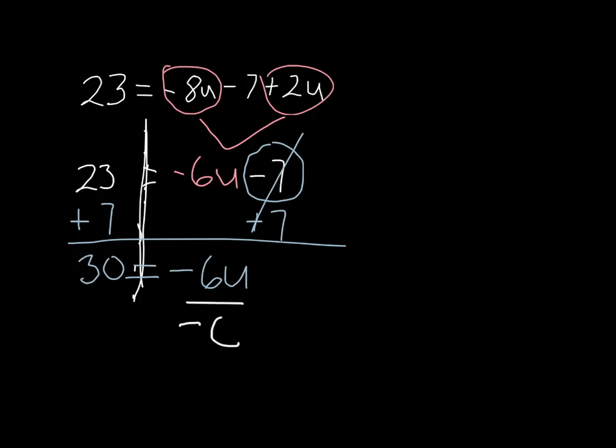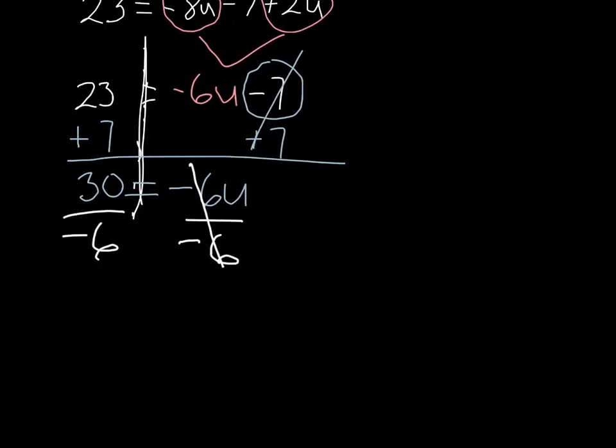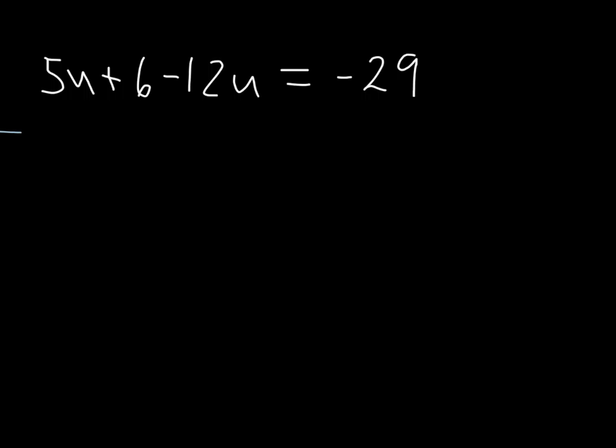Again, whatever I do to one side I do to the other side. Here the negative 6 cancels, and 30 divided by negative 6 gives me negative 5, so I get negative 5 equals u. Okay, so here I'm going to do a second example just so you can see.